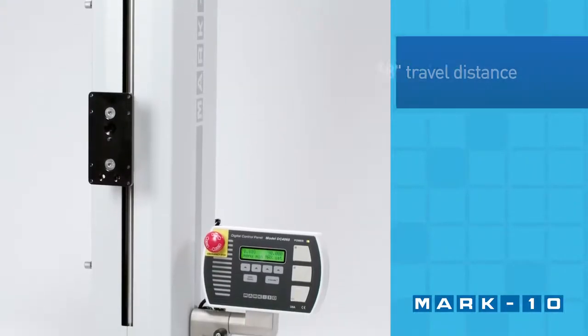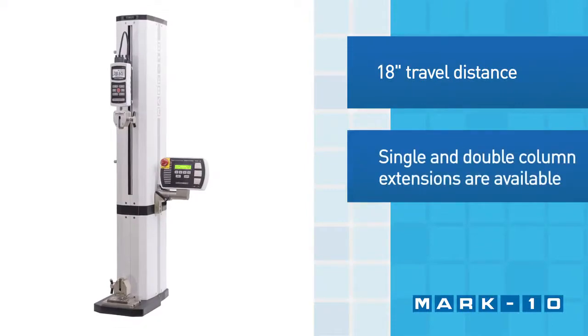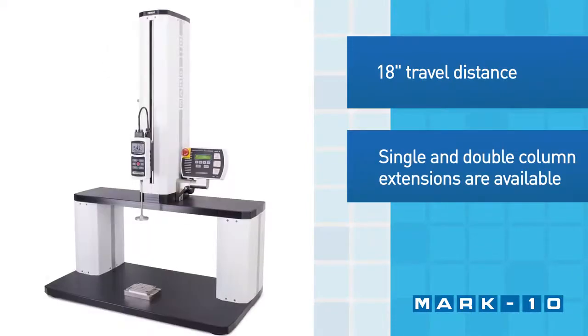The ESM 303 has a generous 18-inch travel distance. The clearance can be increased via single-column extensions or double-column extensions.